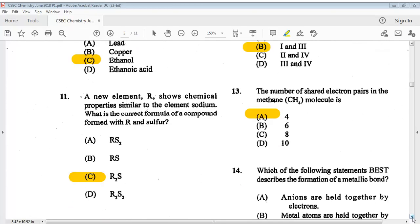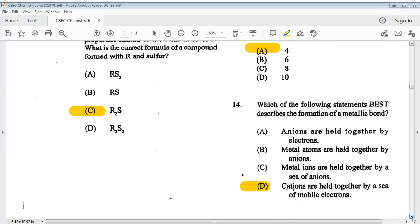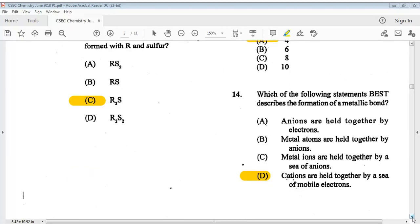Item twelve refers to the information in the following table. Which two elements above when combined with each other form an ionic compound? The answer is B, 1 and 3. Number thirteen: the number of shared electron pairs in the CH4 molecule is, the answer is A, 4.